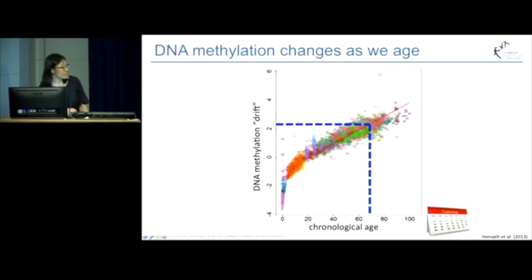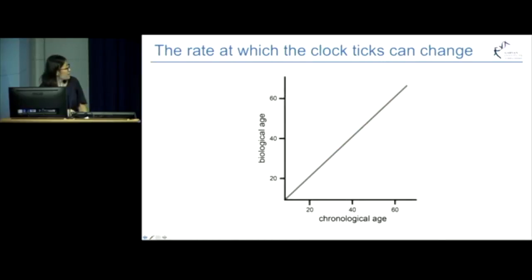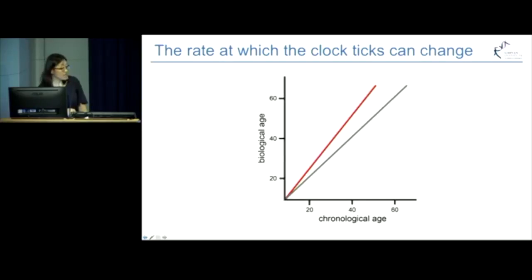That's why researchers have started to call this the biological age. Interestingly, if we look at the section before the age of 20, the change in methylation is much faster than the change in age, and that's representative of the fast development we all experience before adulthood. So the rate at which the clock ticks is not set in stone. The biological age can either be accelerated or decelerated compared to the chronological age.